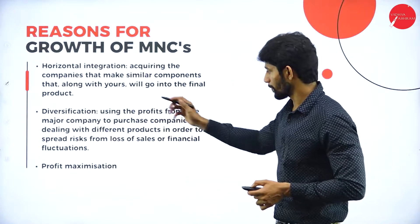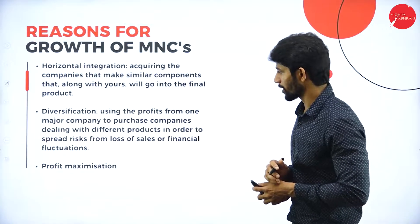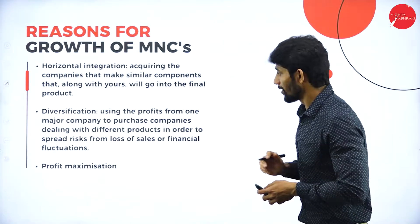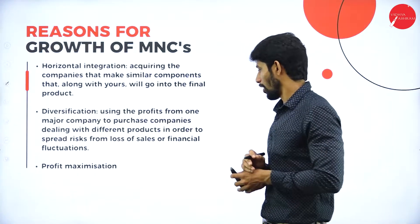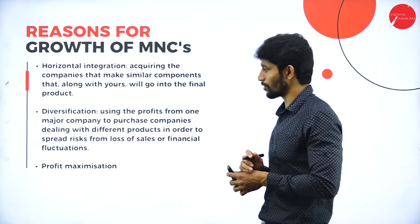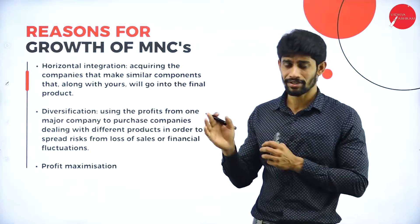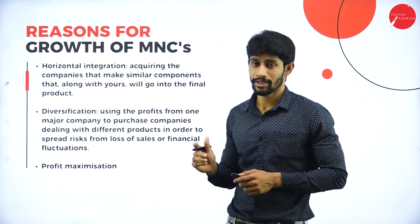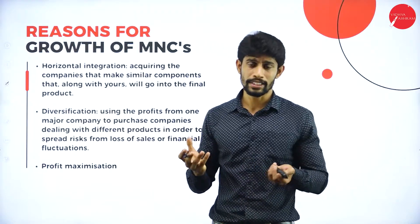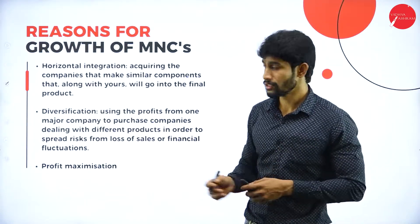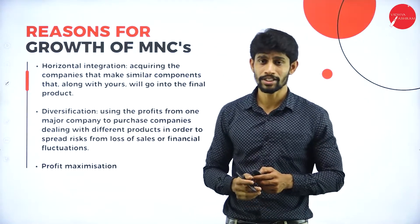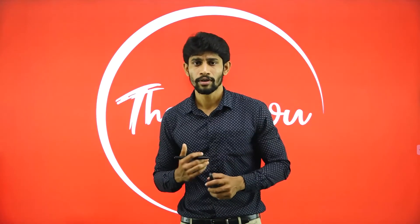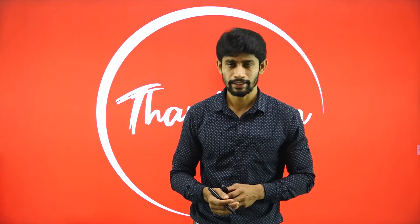Diversification involves using the profit from one major company to purchase companies dealing with different products in order to spread risk from loss of sale or financial fluctuation. The last reason is profit maximization — to earn profit, we have to go multinational. So these are all the reasons for growth of multinational companies. With this, I end this session. For more videos, keep watching. Until then, thank you all.